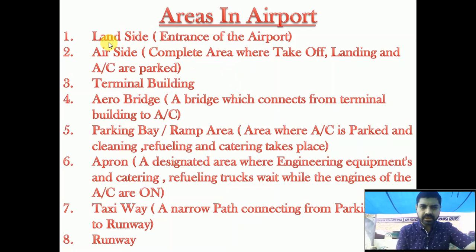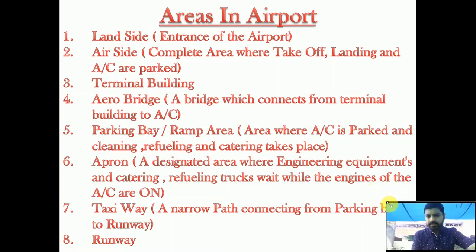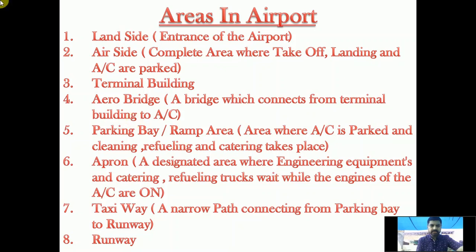As you can see, I have listed these eight points — you can pause the video and note them down. Starting with: land side (entrance of the airport), air side (complete area for takeoff, landing, and parked aircraft), terminal building, aero bridge (connects terminal building to aircraft), parking bay, apron, taxiway, and runway.